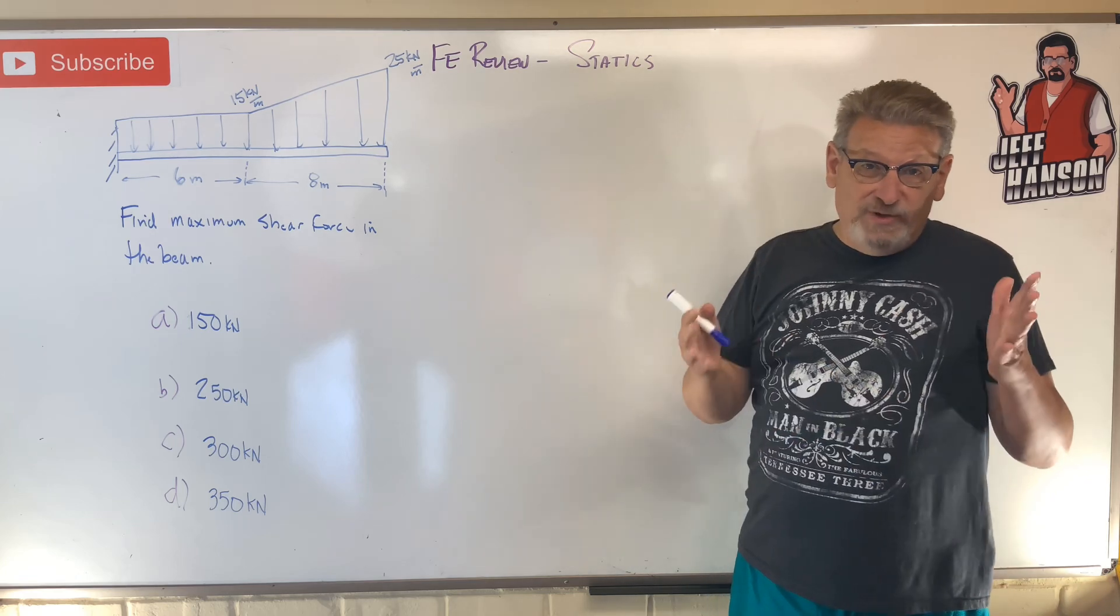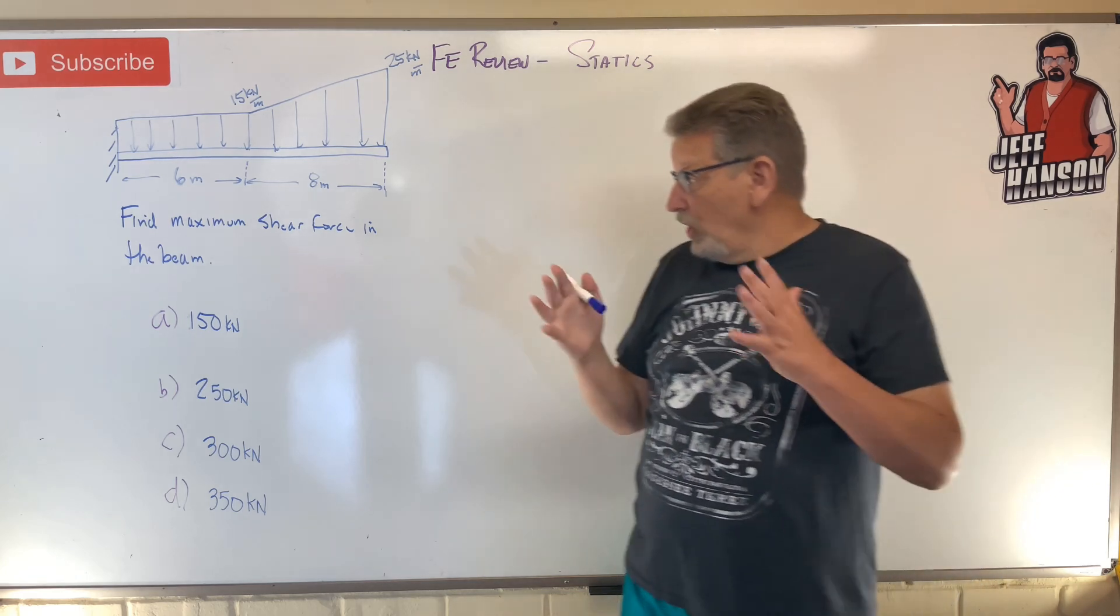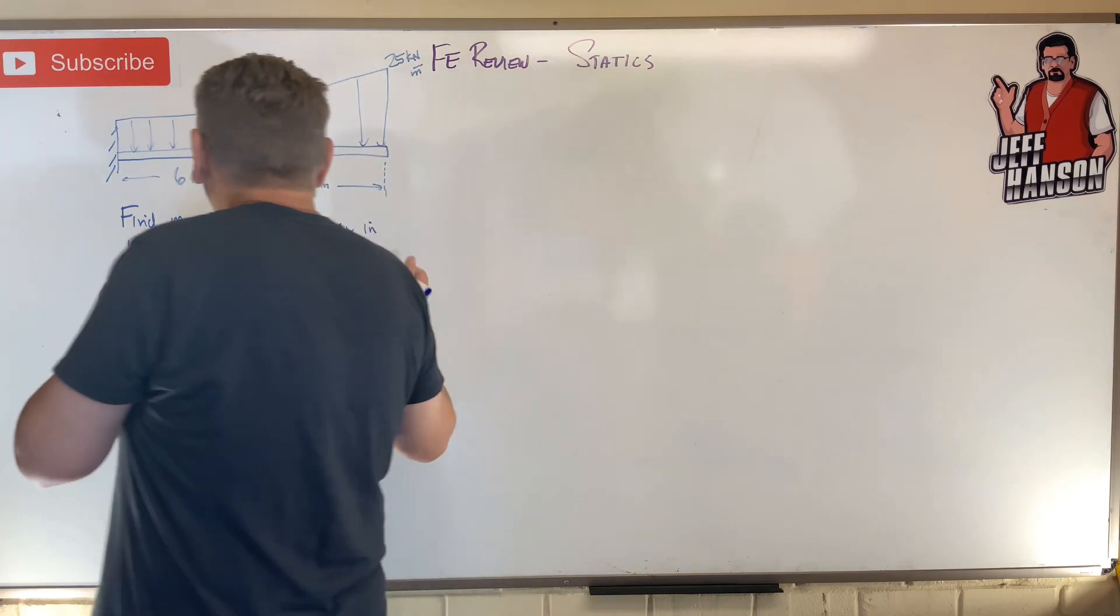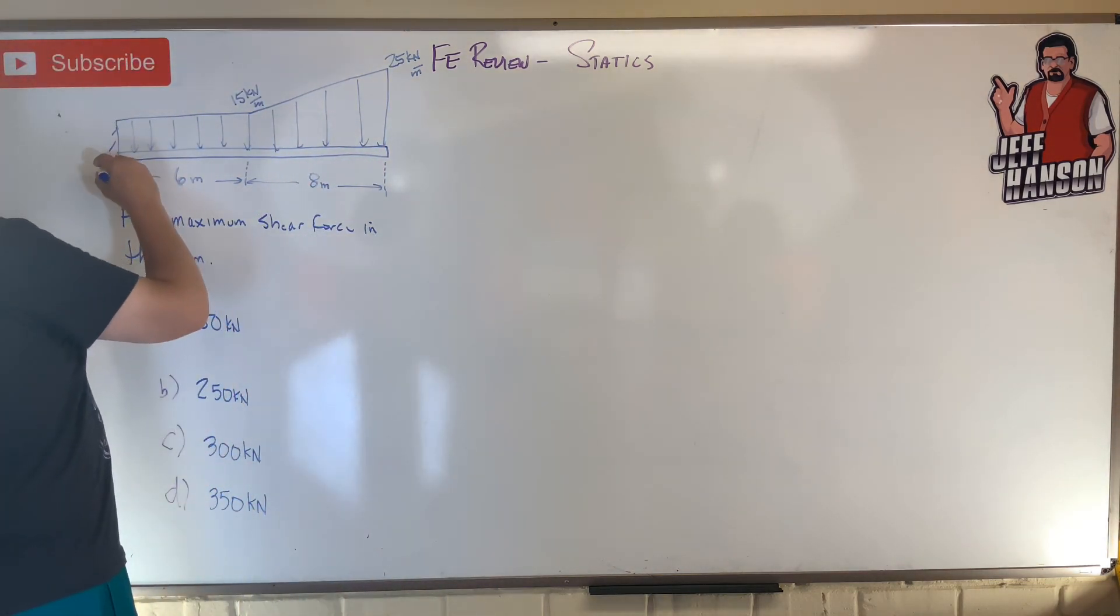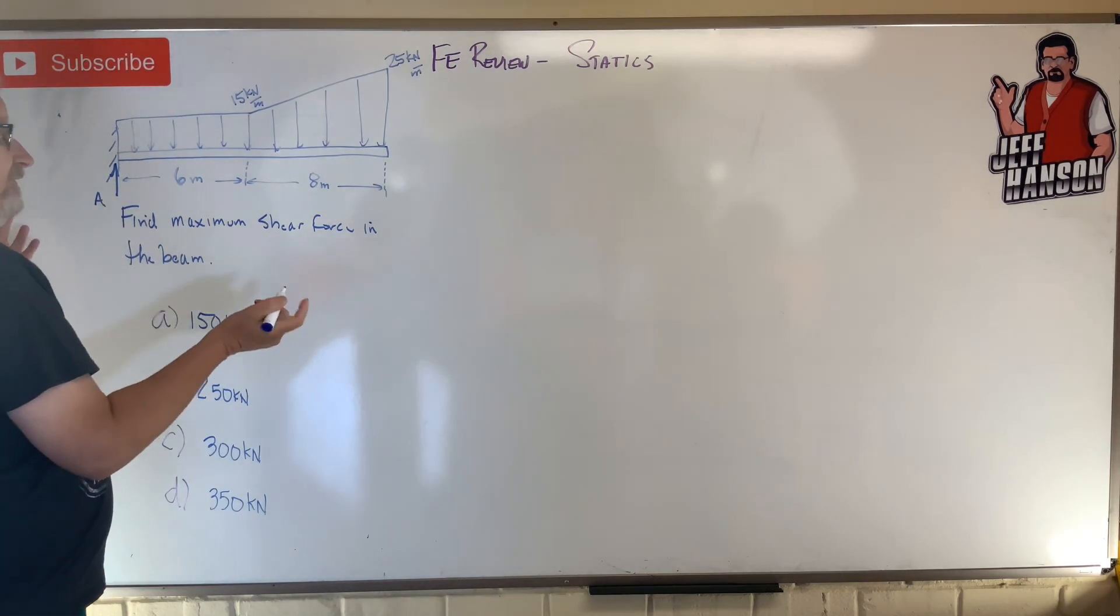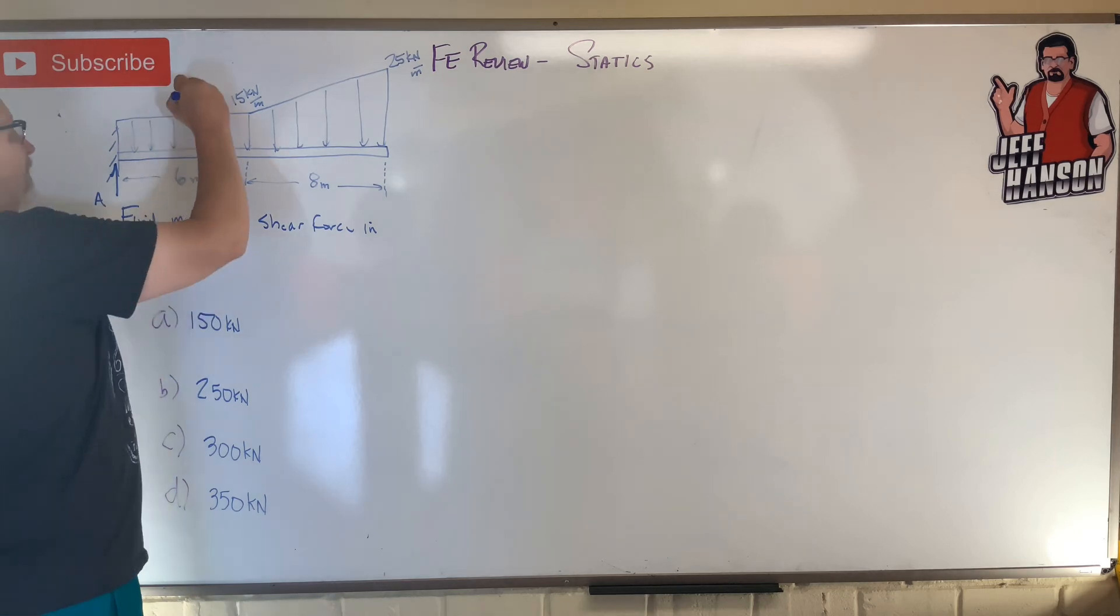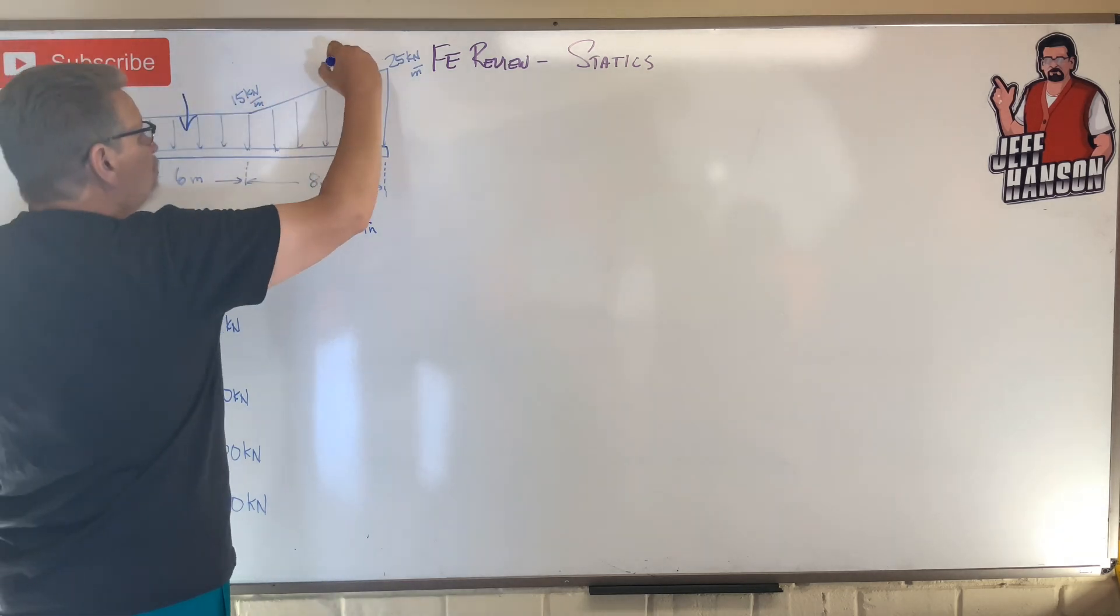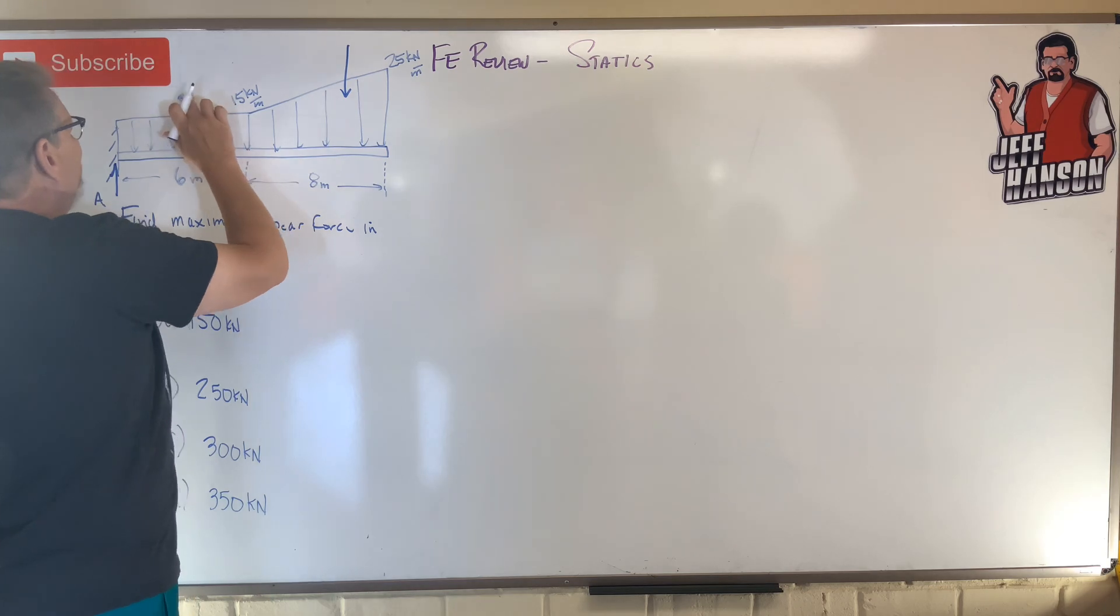All right, did you do it? Let's go. Maximum shear force in the beam. Step one: what is this guy right here, the reaction at point—let's call it point A. Okay, up stuff equals the down stuff. It's the only place for up stuff, right? I've got two distributed loads over here.